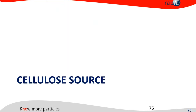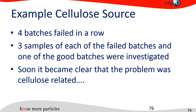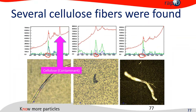Now the cellulose source case — an investigation we conducted a couple of years ago. In this example, four batches failed in a row. We looked at three samples from each batch, establishing what you could now call a short-term particle profile for that product and tried to find the source of the problem. It very quickly became clear that cellulose played a big role, and in this case the cellulose gave us an advantage: the majority of that cellulose had an extra peak, and we knew where to look.